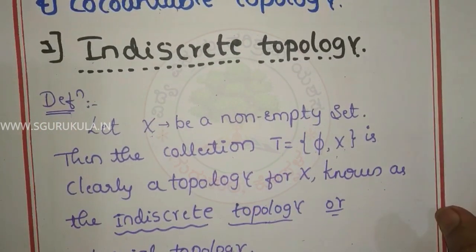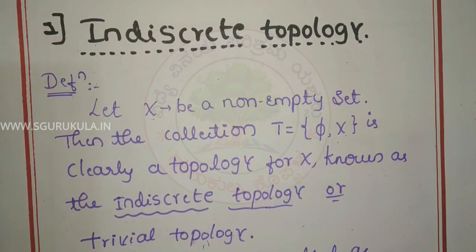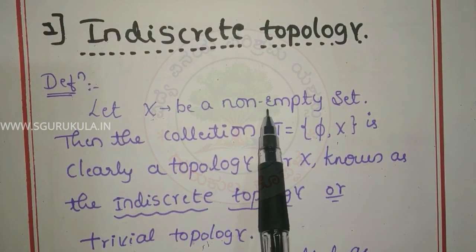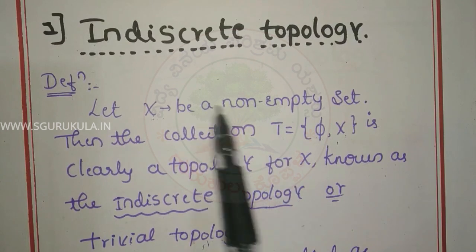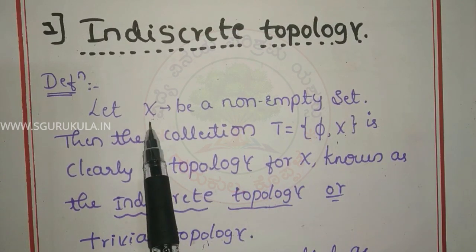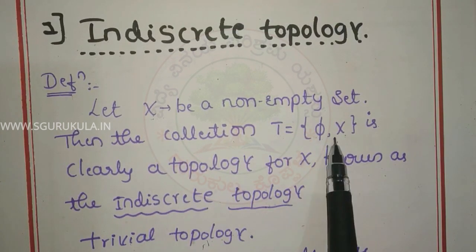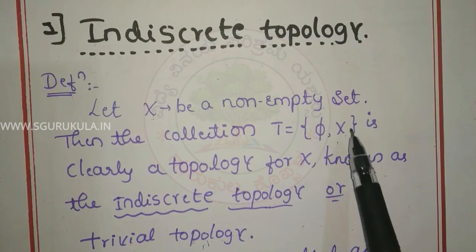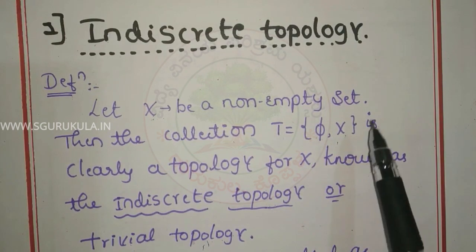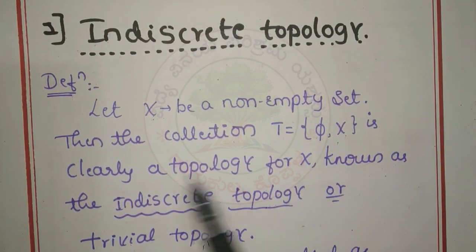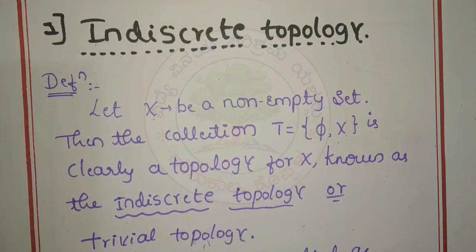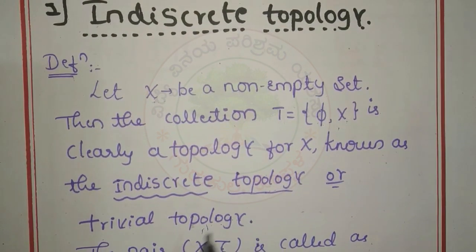First, let us look at Indiscrete topology. The definition is: let X be a non-empty set and T be a collection of subsets of X. That collection contains only two elements: phi and X. So this forms a topology on X, as we already proved in the previous class.